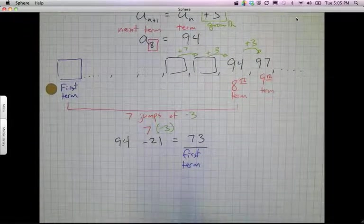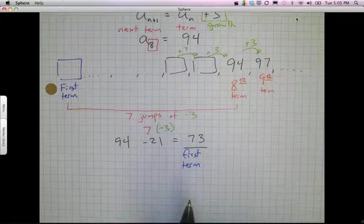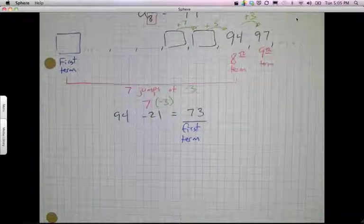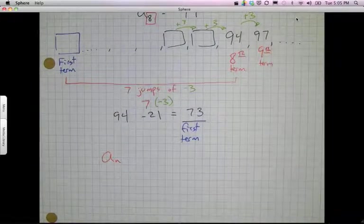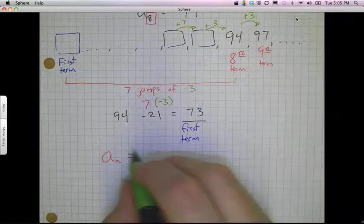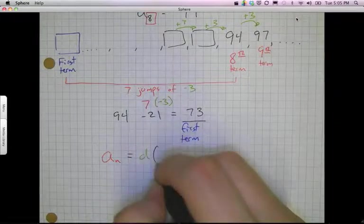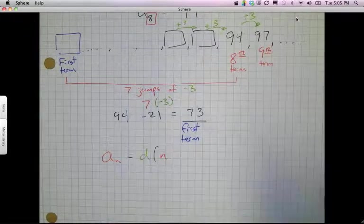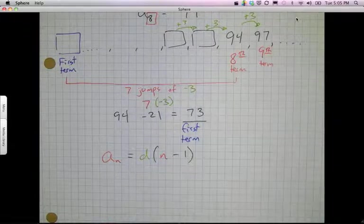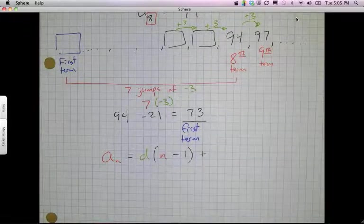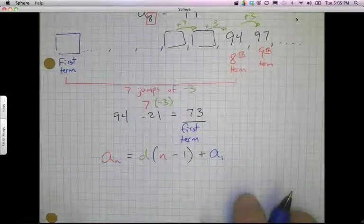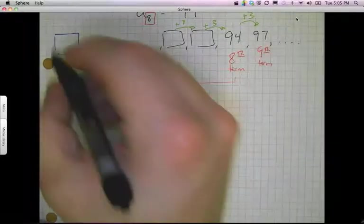So once I've got that, I pretty much have everything else that I need to find my explicit formula. Now my explicit formula, again, is a sub n equals the difference times the term number, which in this case is n minus 1, plus my first term, in this case is a1. And I found all those pieces. So here, to kind of write it down, this is 73.